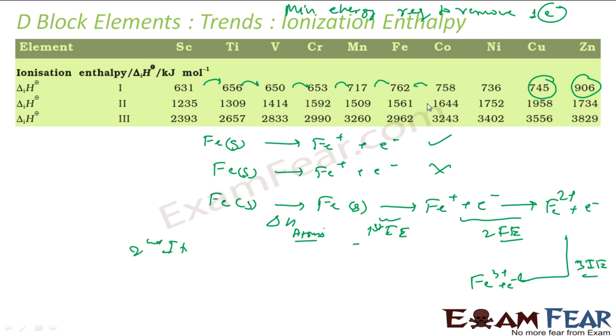Copper has lower value. Zinc has higher value. The answer lies in the electronic configuration. Right. If you see chromium also has little low value only. Let's talk about the copper.